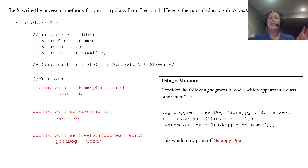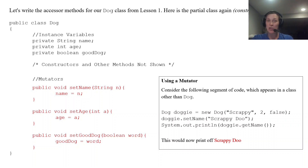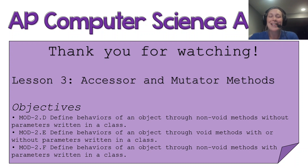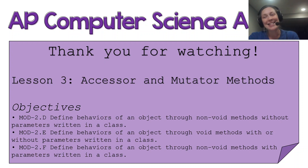So that is accessors, the toString method, and mutator methods all together. That brings us to the end of this lesson on accessor and mutator methods. As always, thank you so much for watching, and I will see you in the next lesson.